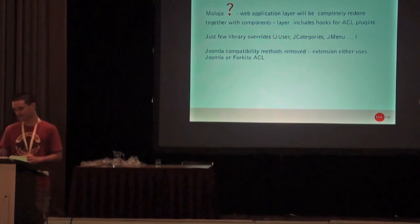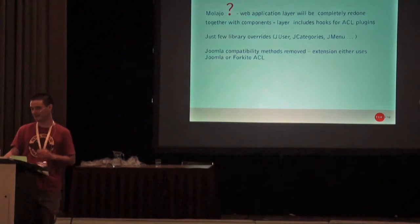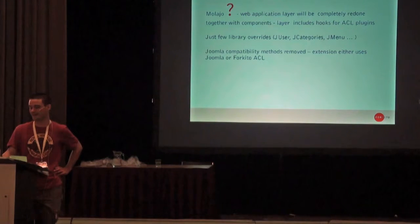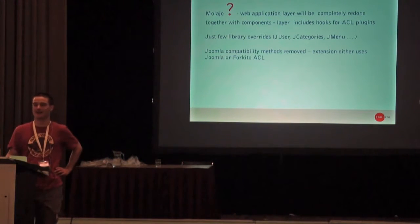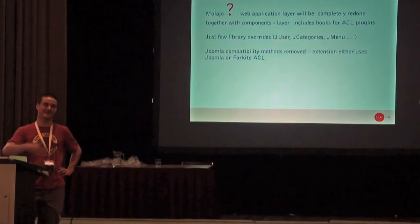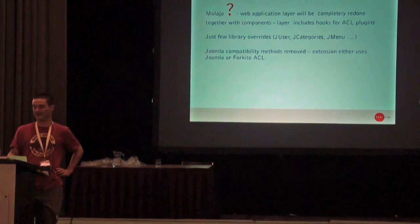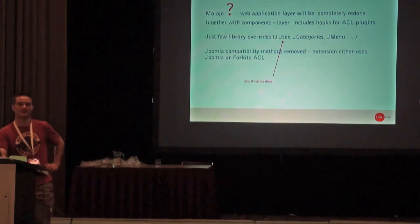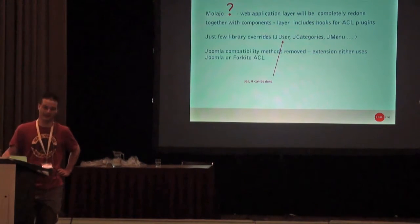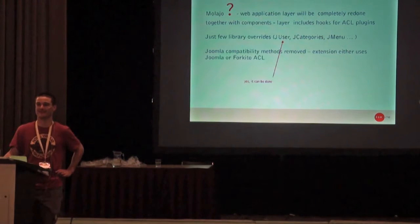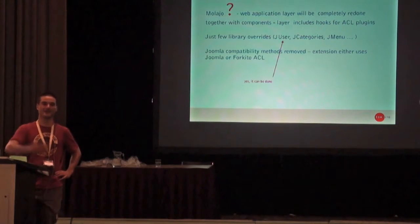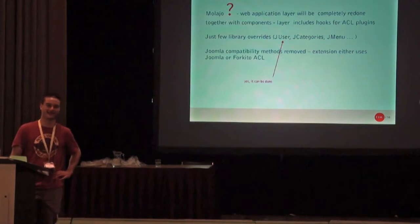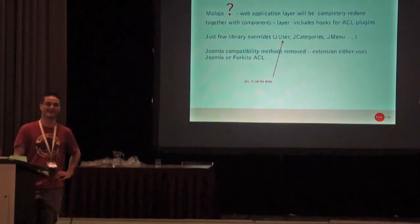This one will include just a few library overrides to basic classes like JUser or JCategories, because the ACL is also hard-coded in those. But it will be done with overrides — so it's not a fork, because it's overloading, pre-loading the classes. Even JUser can be overridden in 1.6 using a define-streak: one file loaded before the whole framework, and if you load the class from there, the system will use your JUser class, not the one that's in the system.